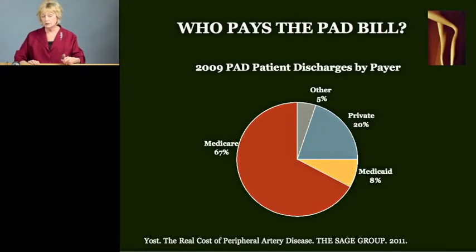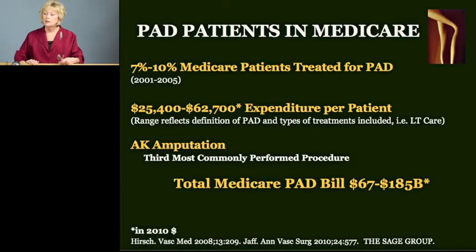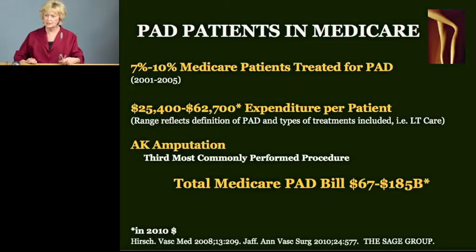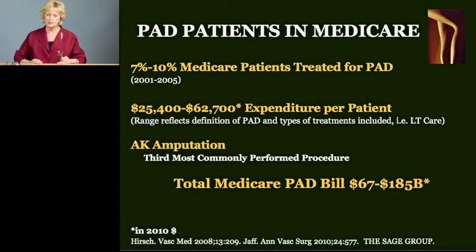Who pays the PAD bill? Medicare and Medicaid pay 75 percent of the national bill — in other words, your tax dollars. If we examine PAD patients in Medicare, 7 to 10 percent of Medicare patients were actually treated for PAD. The per patient cost was between $25,000 and almost $63,000. The difference in that range reflects both the definition of PAD in the two studies, as well as the types of services and care included. Specifically, long-term care was included in that higher cost figure.